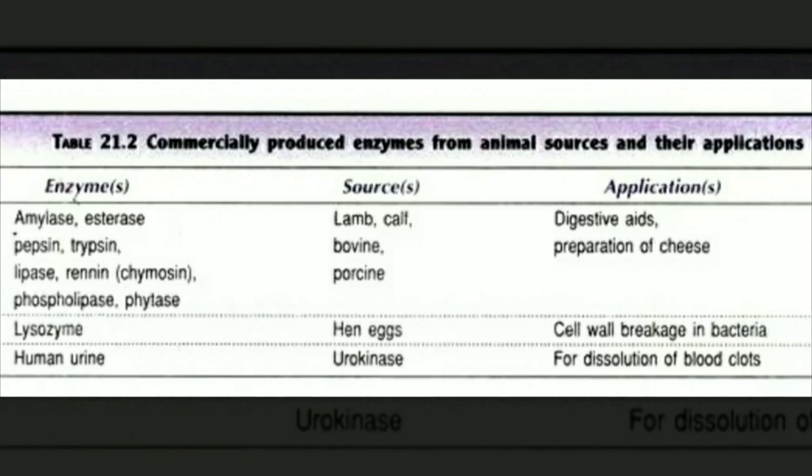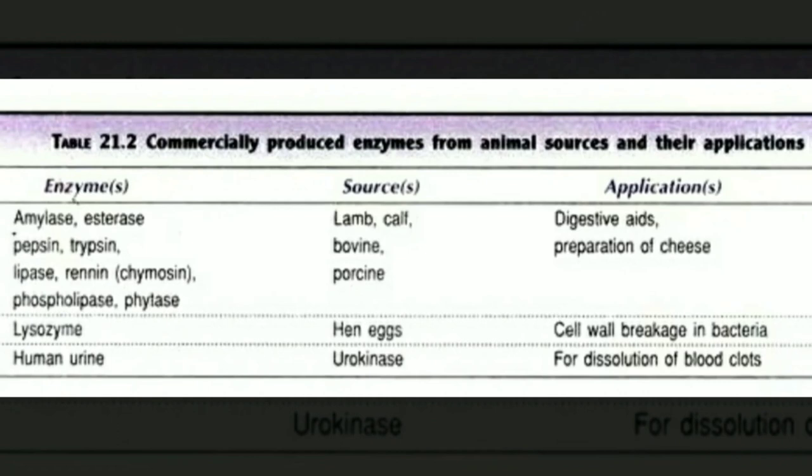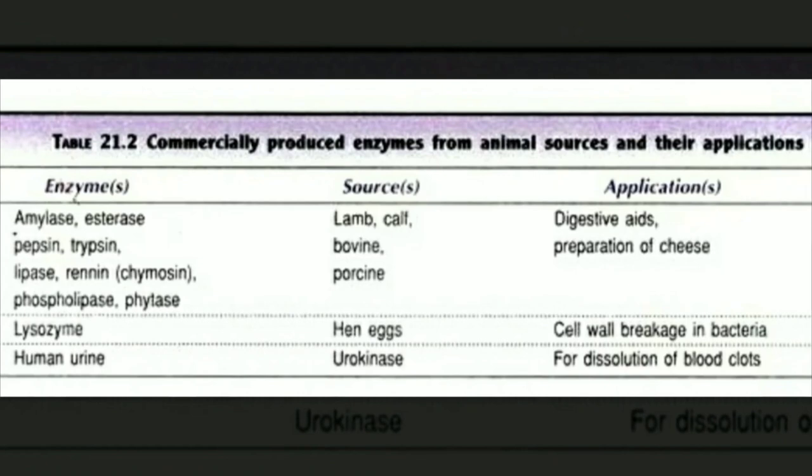Enzymes from animal sources include amylase, esterase, pepsin, trypsin, lipase, renin, phospholipase, and phytase, obtained from lamb, calf, bovine, and porcine sources; these are used for digestive aid and preparation of cheese. Lysozyme is obtained from hen egg white and is used for cell wall breakage in bacteria. Urokinase from human urine is used for dissolution of blood clots.